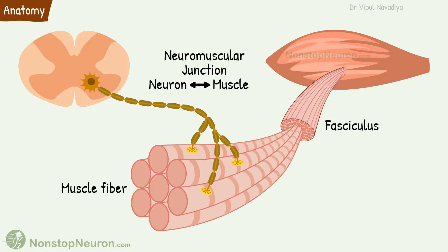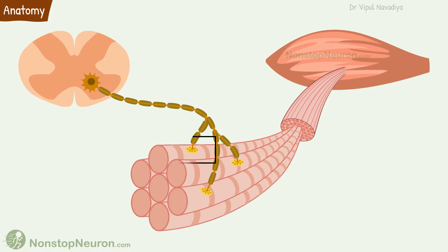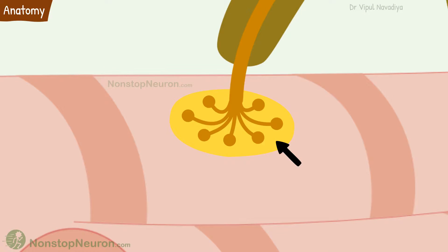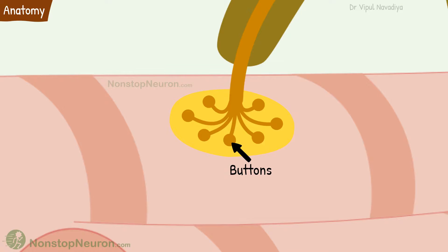The axon typically makes a single point of contact midway along the length of the fiber. This is the neuromuscular junction or muscle end plate. Here the axon branches like a tree, and the bulb-shaped endings that finally contact the muscle are called buttons.